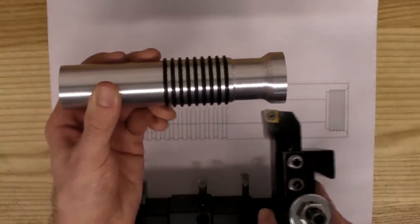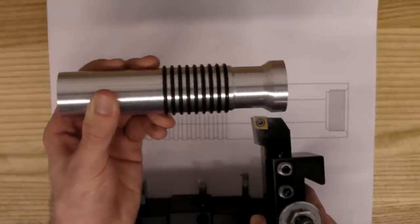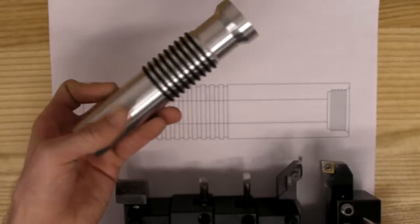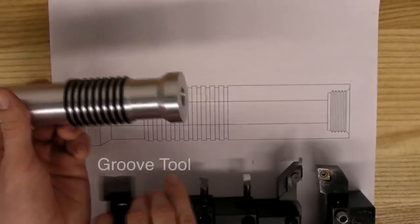For example, how would you machine the groove of the thumb grip with a right-handed cutting tool? You can't. To machine features like this, you'll need to use a groove tool.